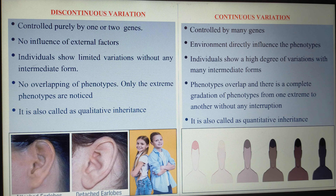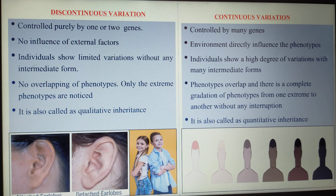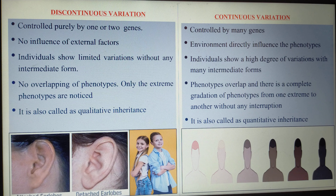These are the two different types of variation. In discontinuous variation, few genes control the character, purely controlled by genes with no external influence. Whereas in continuous variation, it is controlled both by genes as well as by the environment, and there is a high degree of variation.